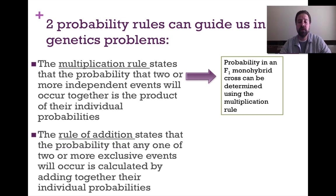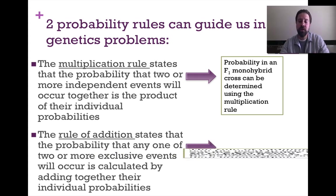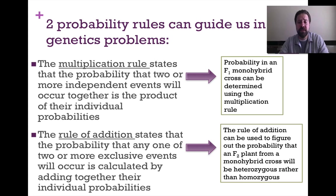The other rule is the rule of addition. It states that the probability of any one of two or more exclusive events occurring is calculated by adding together their individual probabilities. That's almost like taking the multiplication step and applying it further. The rule of addition is used to figure out the probability of, say, an F2 plant from a monohybrid cross being heterozygous or homozygous.